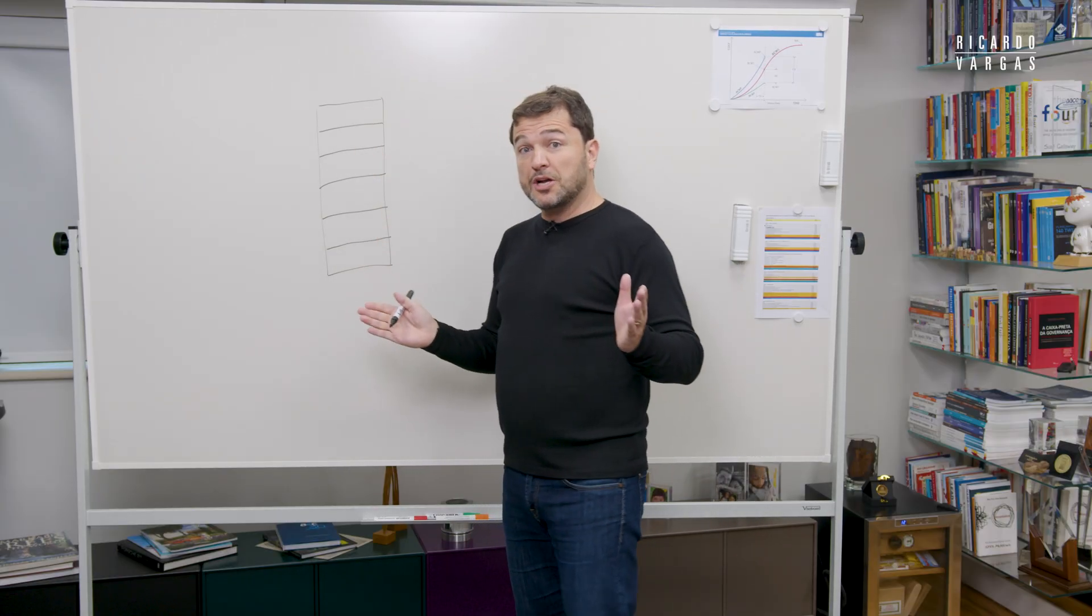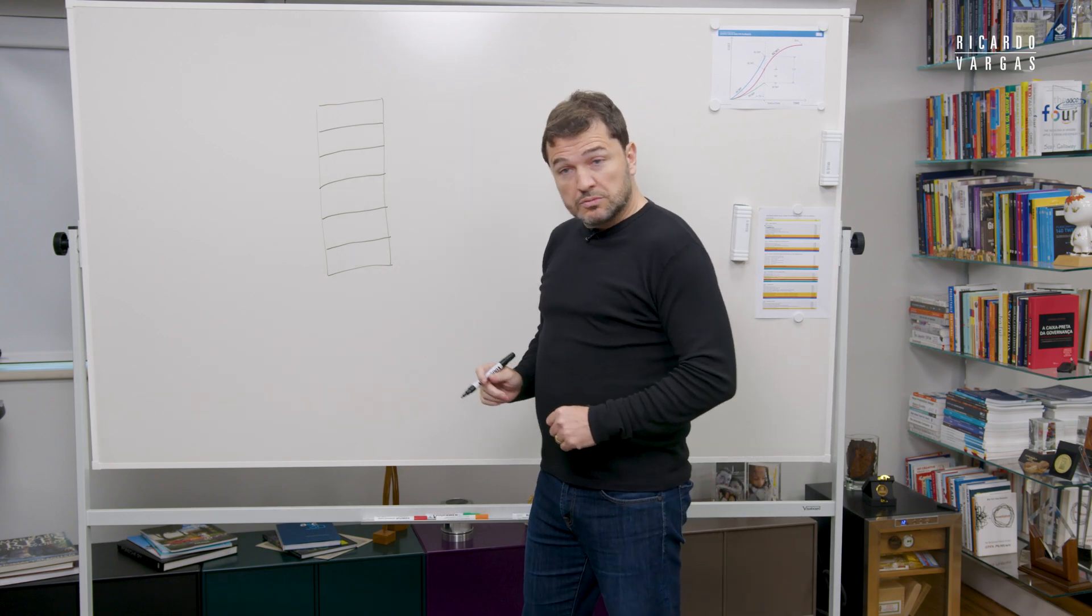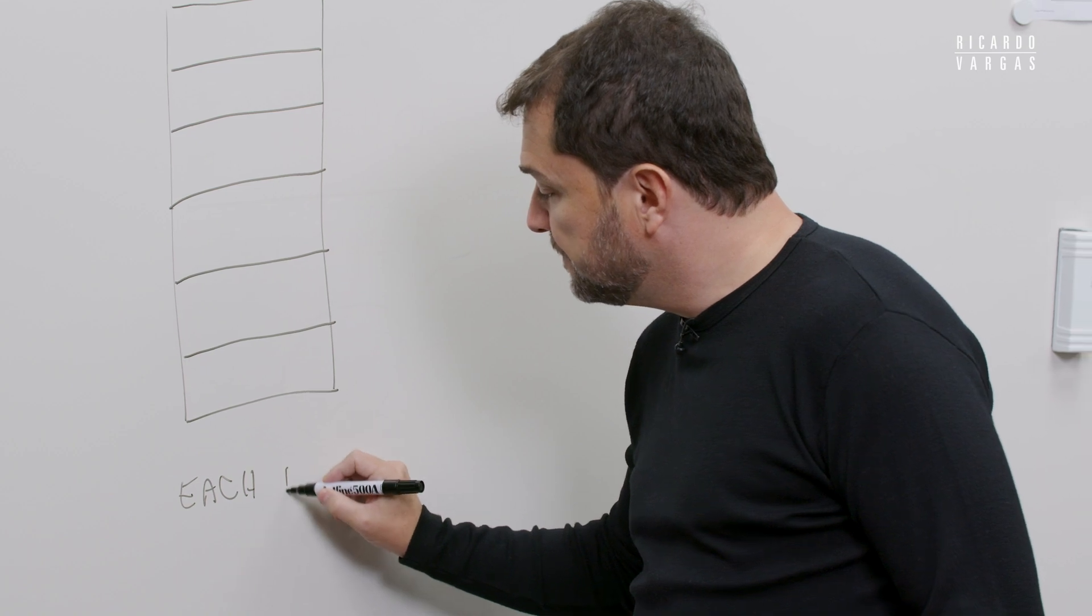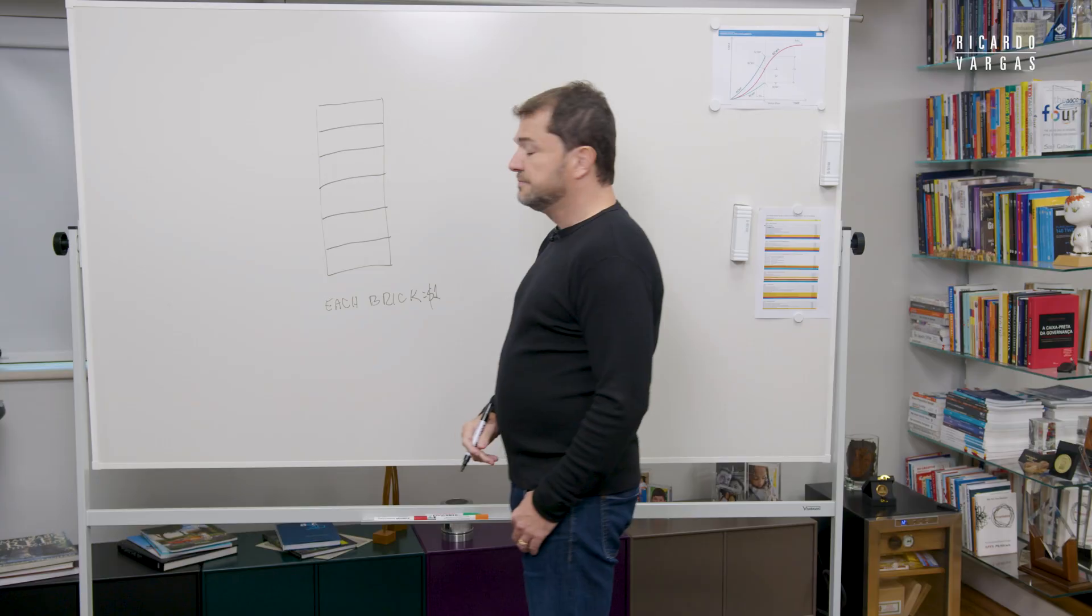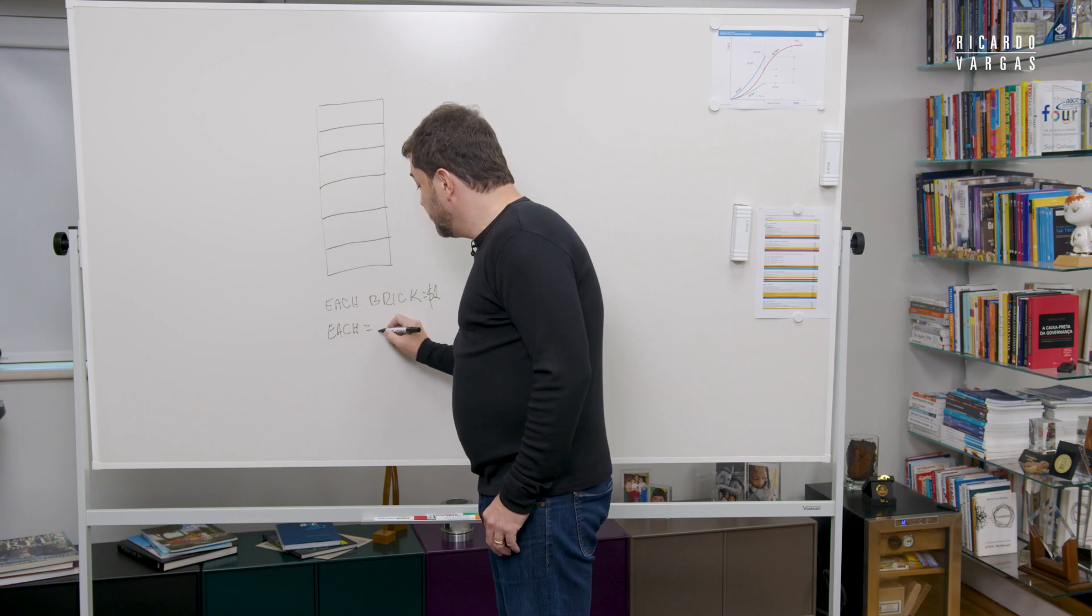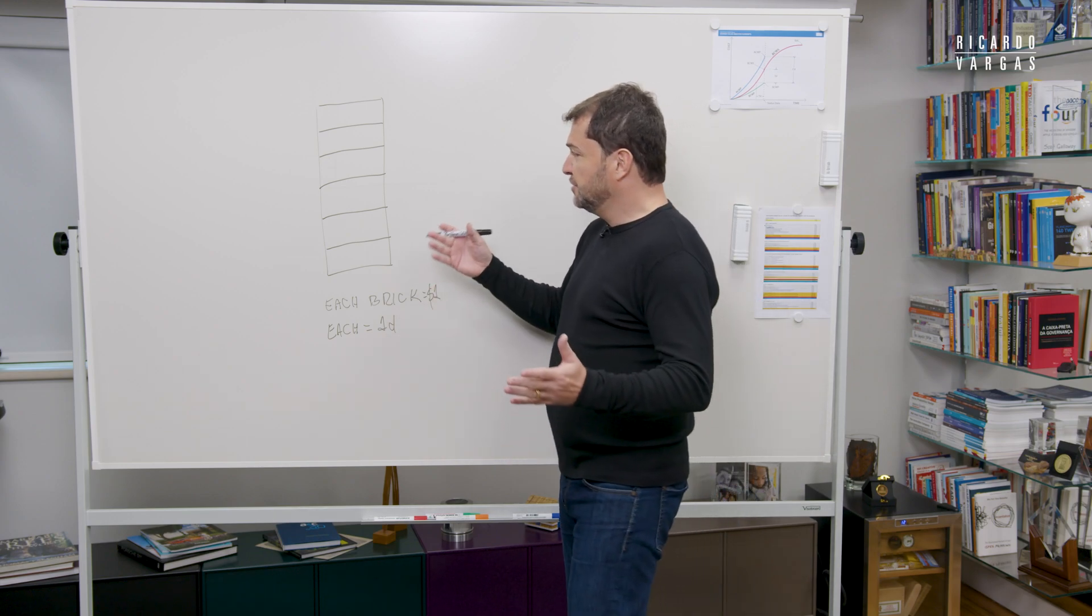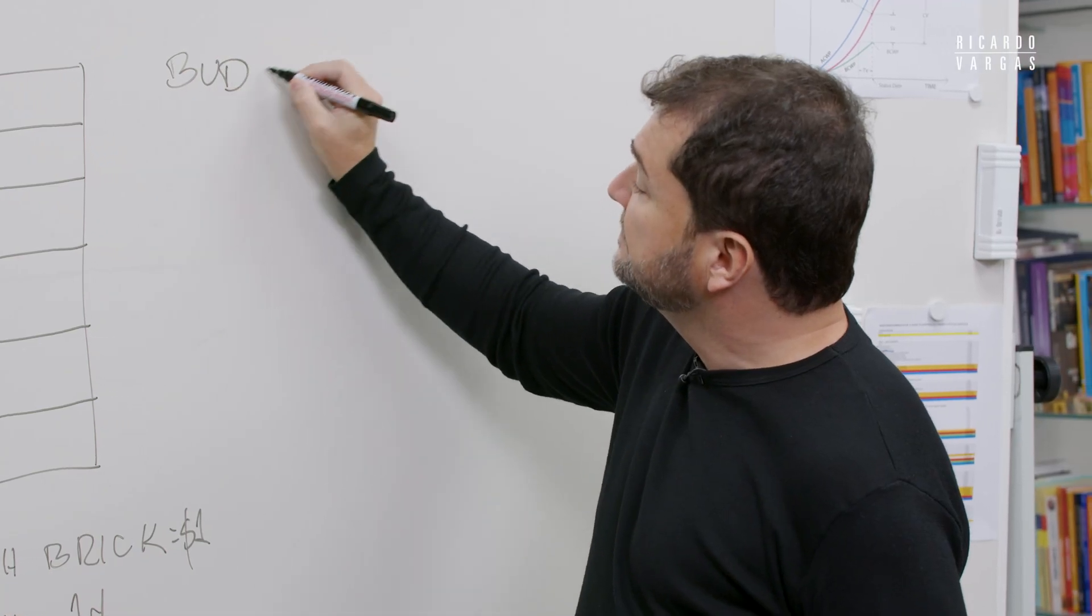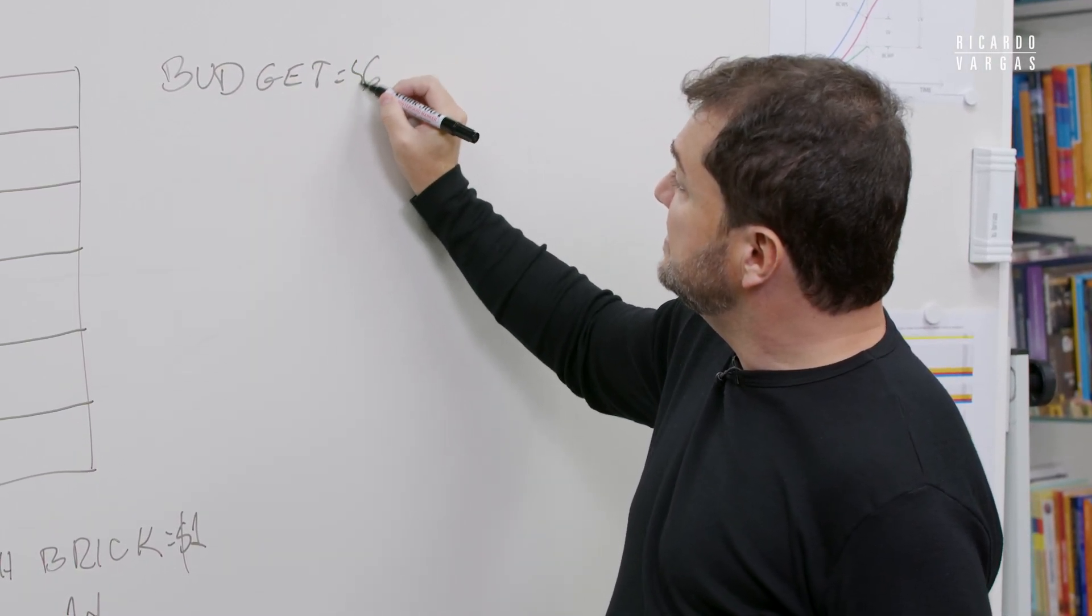These six bricks, and your project will come to an end when you pile up these six bricks. You know that each brick costs $1, and each brick is produced in one day. Very simple. So this project, just by doing an analogy here and multiplying this, the budget of this project is $6.